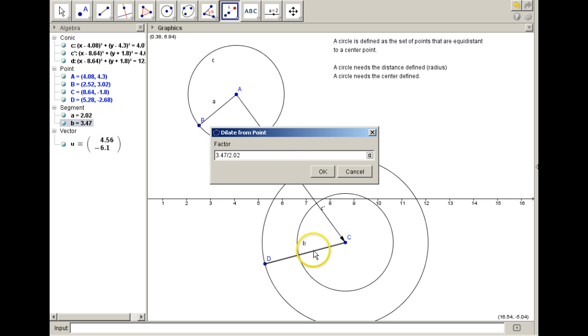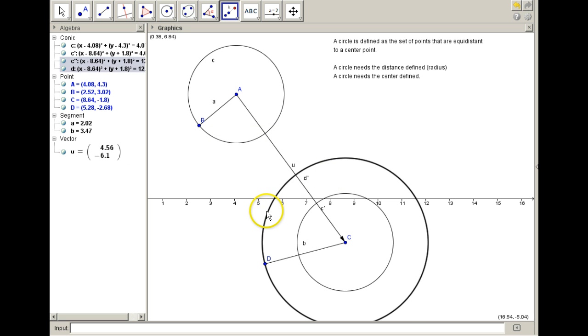When we multiply every point's distance, the 2.02s are going to cancel out, and we'll have just a new distance of 3.47. And now you can see that these circles are going to be identical.